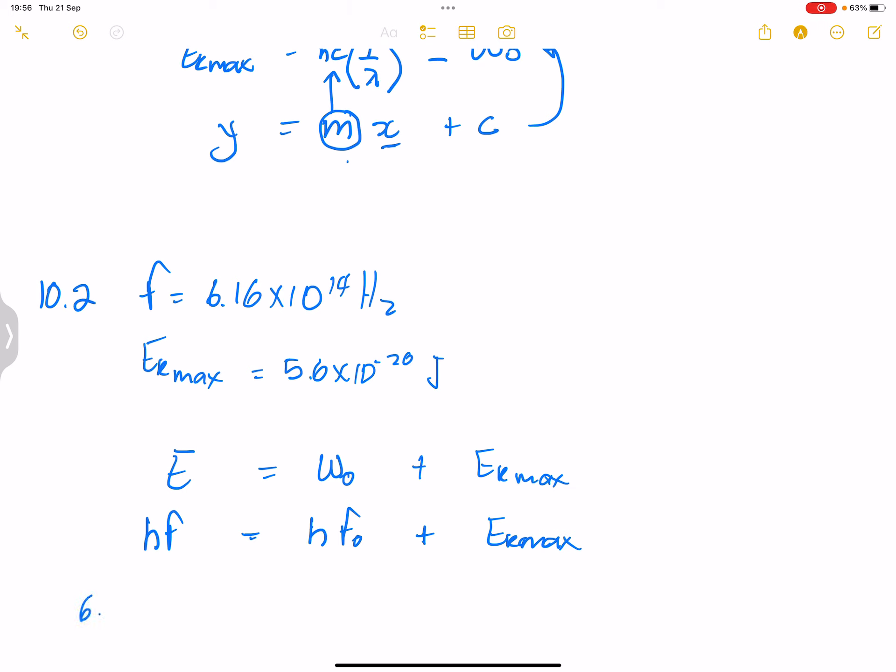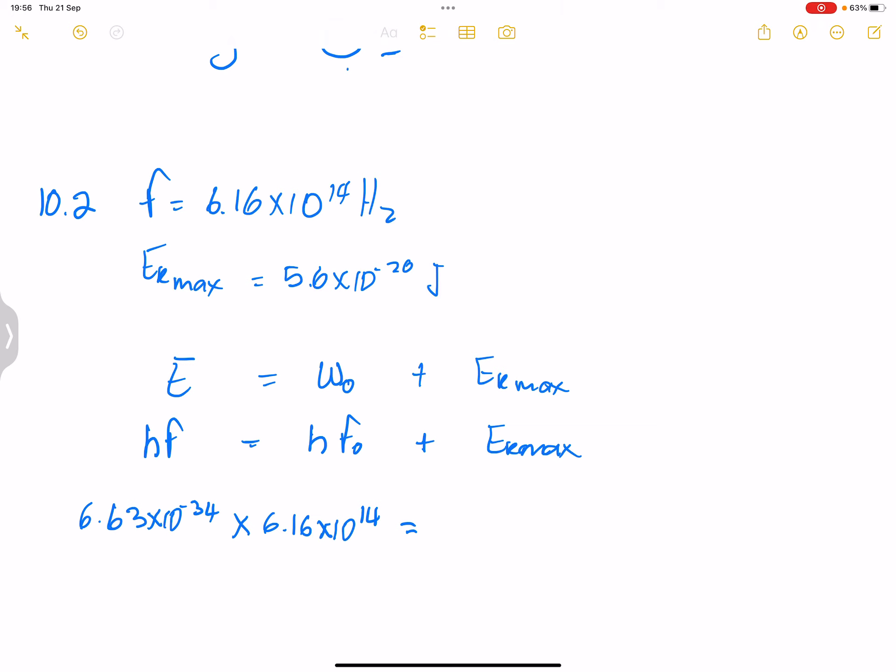Now let's substitute. Of course, we know this is Planck's constant. 6.63 times 10 minus 34 multiplied by the frequency, which is 6.16 exponent 14. And this is equal to, now think about this threshold frequency. I can write it as C over λ. So that would be 6.63 exponent minus 34 multiplied by the speed of light, multiplied by 1 over λ, and this is plus EK max. So what is our EK max value? We said that is 5.6 exponent minus 20.